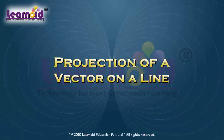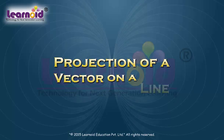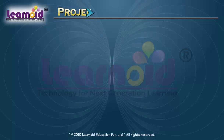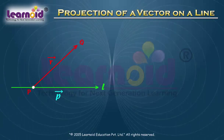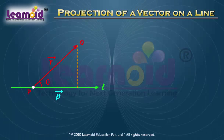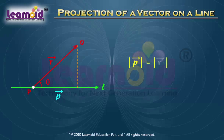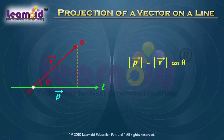Projection of a Vector on a Line. Let us consider a vector PQ which makes an angle theta with a directed line L in the anti-clockwise direction. The projection of vector PQ on line L is a vector P whose magnitude is the magnitude of vector PQ into cos theta, and the direction is either positive or negative depending on angle theta.